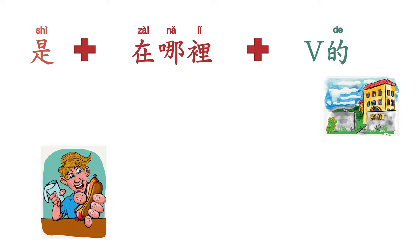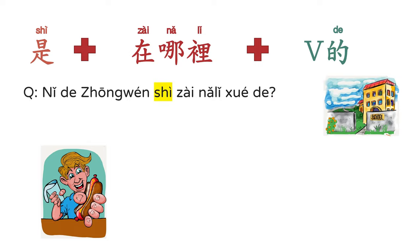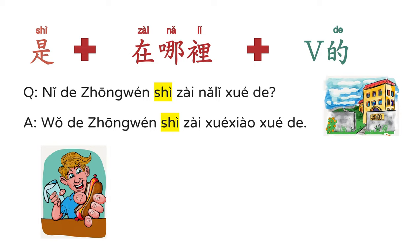Let's practice asking and answering questions. 哪里 (where), 那里 (there), 这里 (here). 是 plus place plus verb plus 的 emphasizes where the action occurs. 你的中文是在哪里学的? Where did you learn Chinese? 我的中文是在学校学的。 I learned it in school.